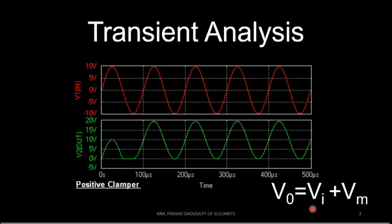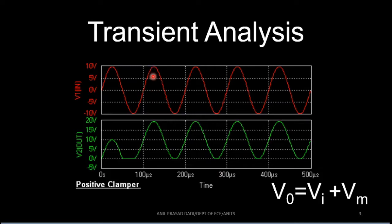As we learned earlier, the positive clamper output is given by v0 = vi + Vm, which represents shifting the input signal to a desired DC level. Simply add the input signal to a particular DC value to get the output voltage. Vm is the positive peak of the input signal, which is 10 volts in this case. At the input peak of 10 volts, adding Vm gives 10+10=20 volts; at the negative peak of -10 volts, -10+10=0 volts.